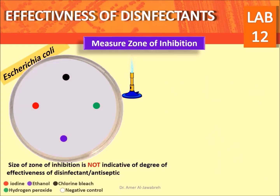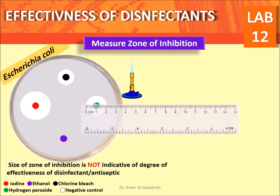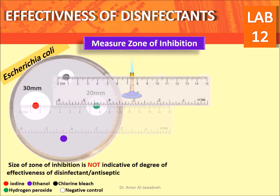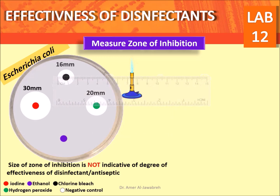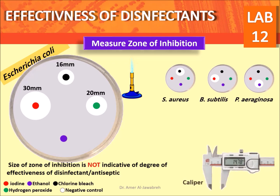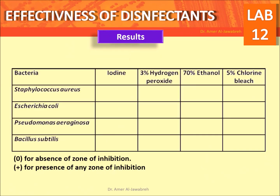Measure zone of inhibition: next day, measure the zones of inhibition around each disk; the ruler should cross the center of the disk for correct measurement. Note that the size of the zone of inhibition is not solely indicative of the degree of effectiveness. Calipers may be used. Use the provided form to report results.